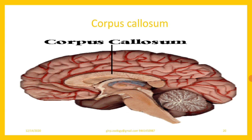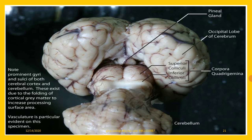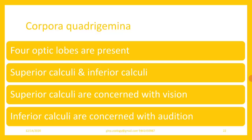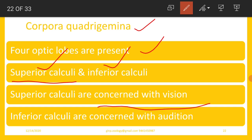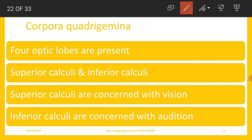There are four optic lobes, and this condition is called corpora quadrigemina — this is exclusive to mammals. Of the four optic lobes, two are situated above and are called superior colliculi, and the lower ones are called inferior colliculi. Superior colliculi are connected with vision, whereas inferior colliculi are concerned with audition, that is, hearing.